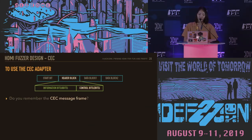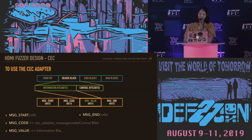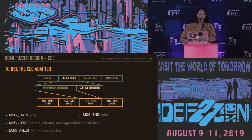Let's look at the code that sends messages to the CEC adapter without using the libCEC library. When data is transferred using the adapter, one block is represented by four bytes — more precisely, the information bits in a block. This works for both the header block and the data blocks. The four bytes consist of: message start, message code, message value, and message end.